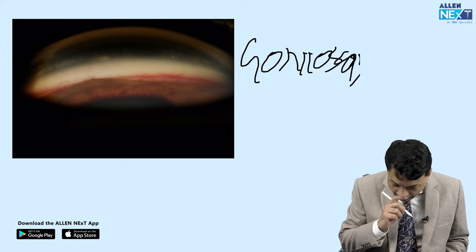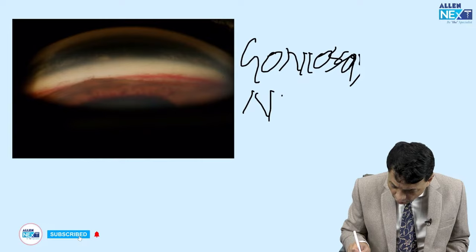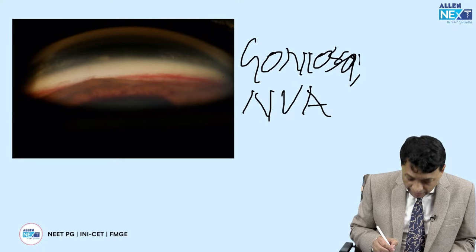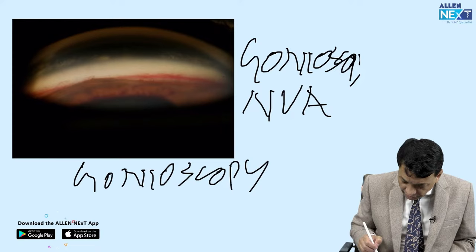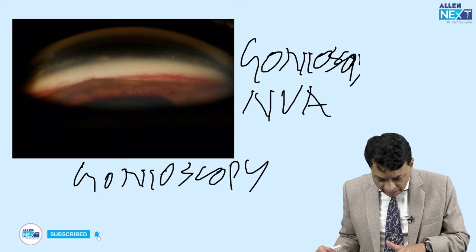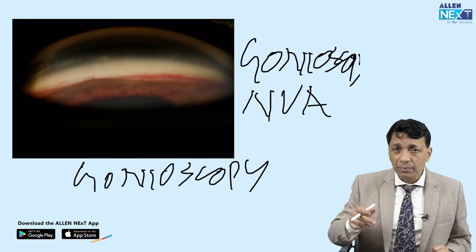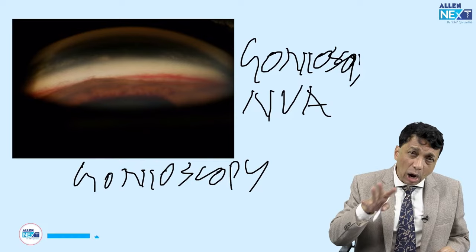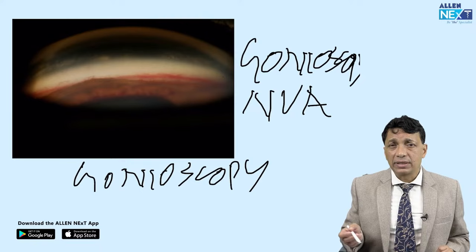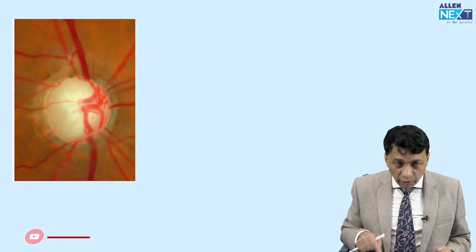Look at this gonioscopic finding — the redness at the angle is neovascularization of the angle, called NVA. It stands for neovascularization of the angle, seen on gonioscopy. The wedge of iris attaches to the ciliary body, and at the angle you see NVA, indicating advanced neovascular glaucoma where the angle is getting zipped up by blood vessels — no aqueous exits the eye, IOP rises. This is secondary angle closure glaucoma diagnosed by gonioscopy.